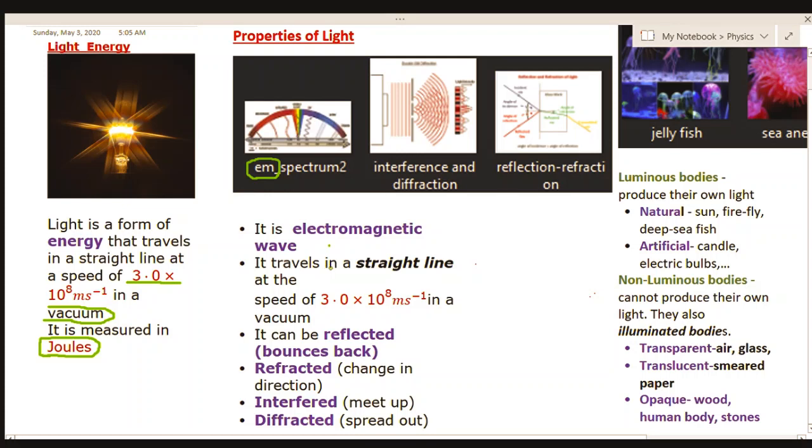According to the law of rectilinear propagation of light, we know light travels in a straight line, and there are experiments to actually prove this using cardboards and a candle. We've already mentioned the speed of light, so we move on.